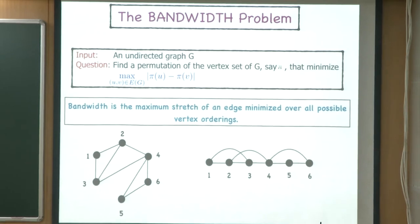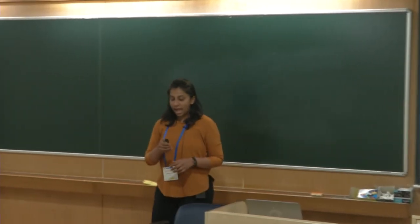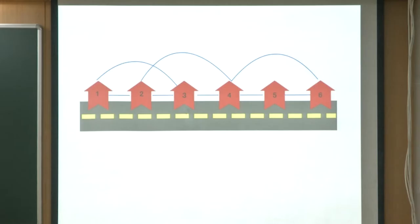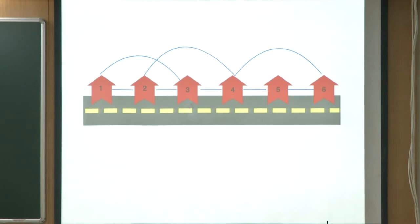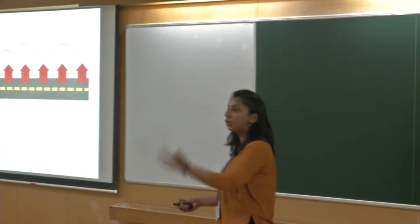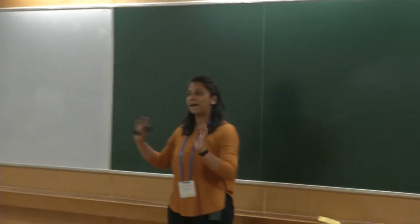Bandwidth is a classical problem that occurs in many real-life scenarios. One typical framework: imagine facilities connected by links representing the need to communicate, arranged in a linear ordering. The distance between two facilities in the linear order is proportional to the cost or delay of communication. The bandwidth problem asks to arrange the facilities so that the communication cost between any two facilities is minimized.